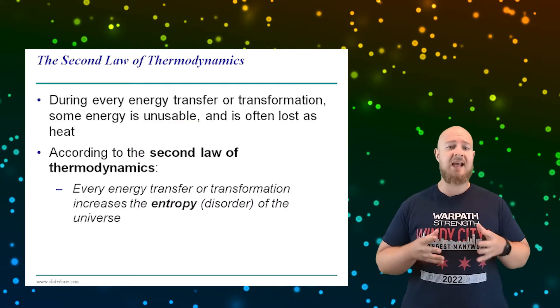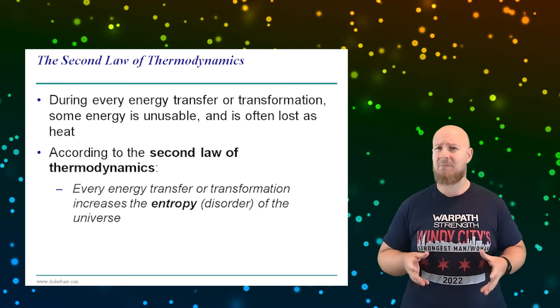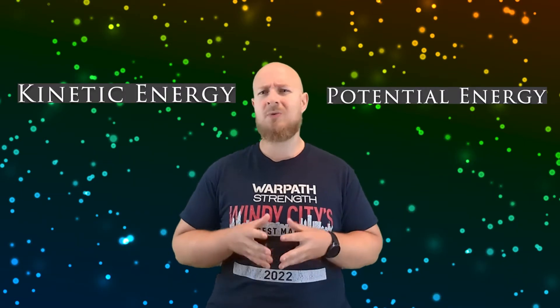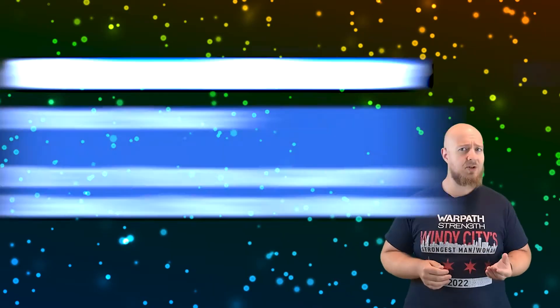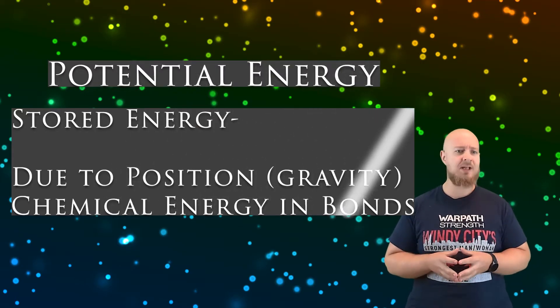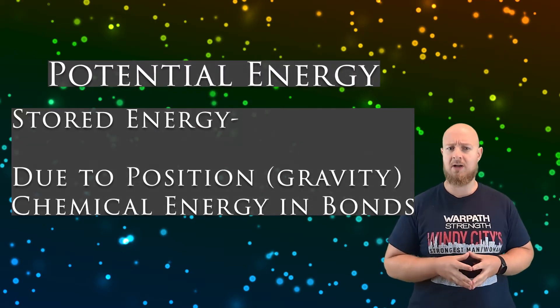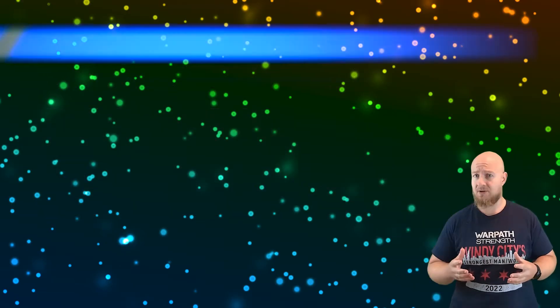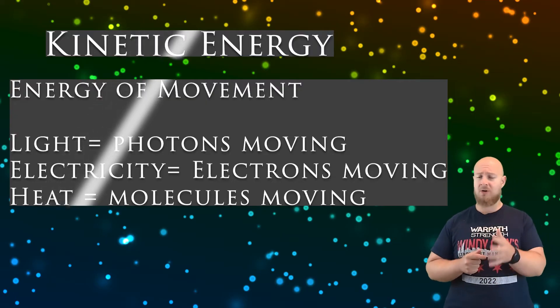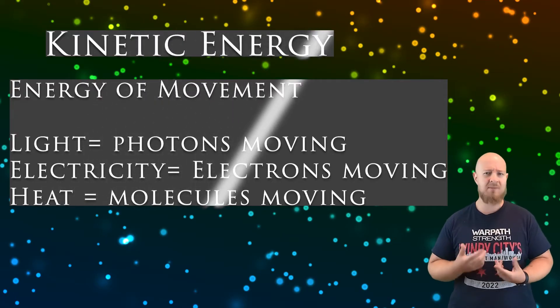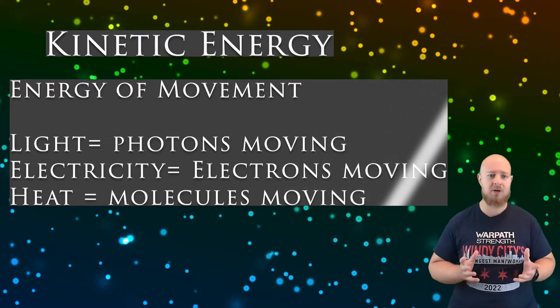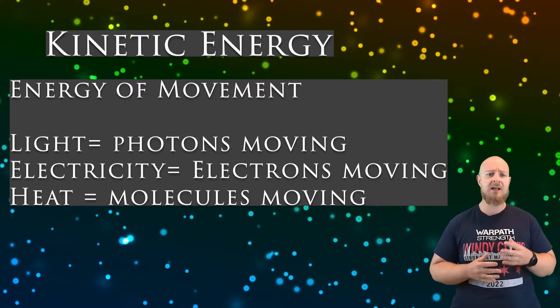There's a few different types of energy but they're really broken down into two categories. There's potential energy, which is stored energy - this is due to the position of an object or the energy stored within chemical bonds. Then there is kinetic energy, which is energy due to motion. Other forms of energy like heat energy, light energy, or electricity are really all forms of kinetic energy because they're all movement. Heat is just the movement of particles, light is the movement of photons, and electricity is the movement of electrons.